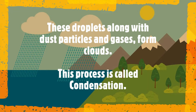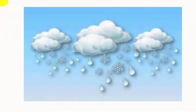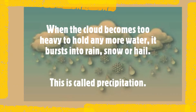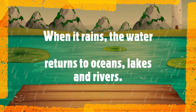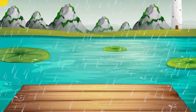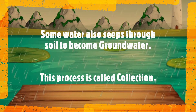This process is called condensation. When the cloud becomes too heavy to hold any more water, it bursts into rain, snow, or hail. This is called precipitation. When it rains, the water returns to oceans, lakes and rivers.